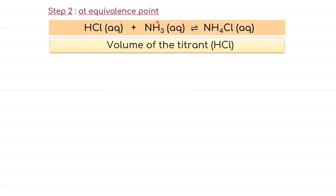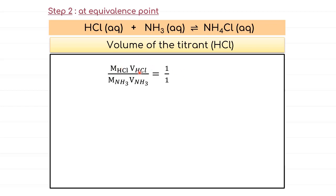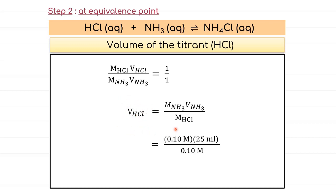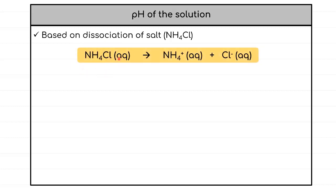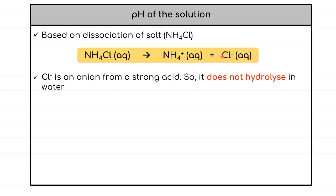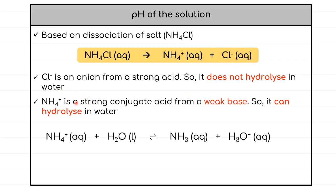Next is the equivalence point. First, we check the stoichiometric coefficients — this is a one-to-one reaction — then we proceed with M_A·V_A = M_B·V_B. We already know both concentrations and the volume of ammonia. We want to find how much HCl is needed to form the salt, so we set aside the volume of HCl, substitute the known values, and get 25 mL as the volume at equivalence point. For the pH, we perform salt hydrolysis of NH₄Cl: the Cl⁻ ion comes from a strong acid and cannot be hydrolyzed, so NH₄⁺ from the weak base will be hydrolyzed.